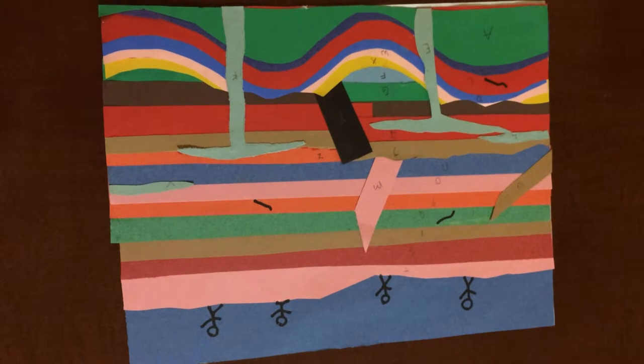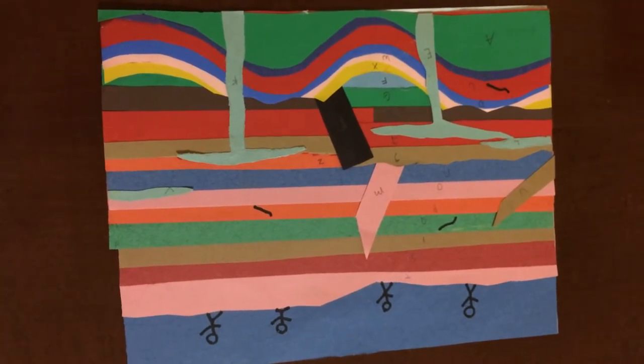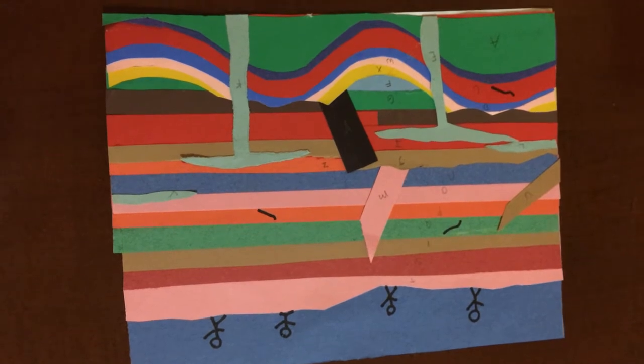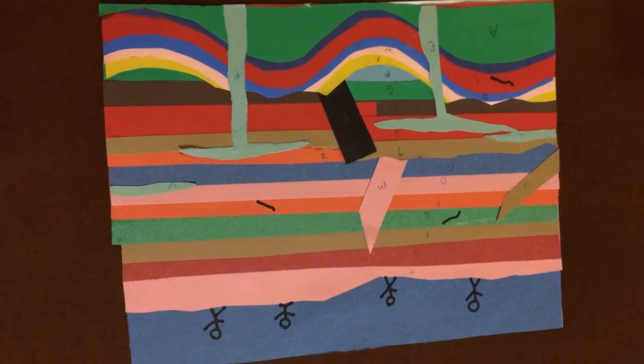Next, erosion. In the poster, some parts of the folded layers are missing. That is because they were eroded. Erosion is a slow, gradual process that happens over time. It begins with weathering.